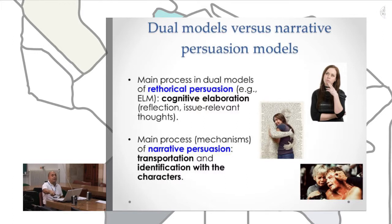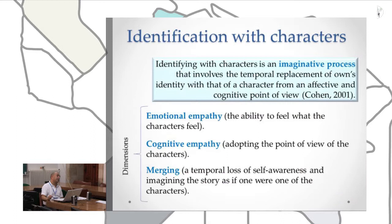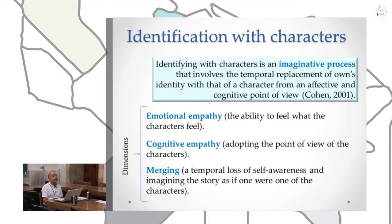Transportation is the process by which the story engages the audience, and identification with the characters is an imaginative process that involves a temporal replacement of one's identity with that of the character, from an affective and cognitive point of view. There are three different dimensions that explain this concept: emotional empathy, cognitive empathy, and merging — a temporal loss of self-identity.